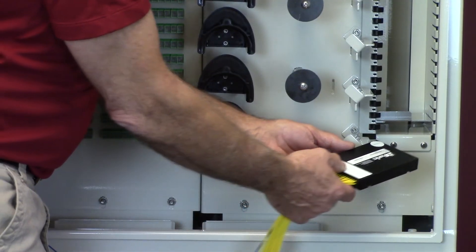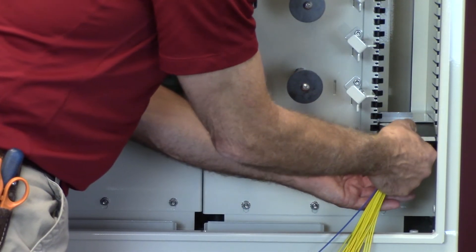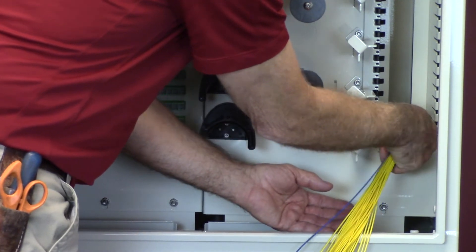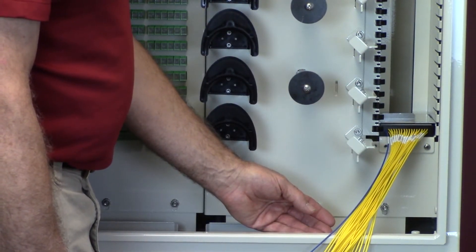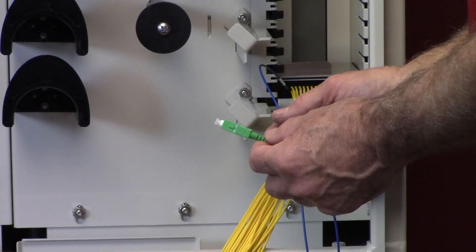Insert the splitter module into the splitter chassis. You will notice this OHC has a vertical splitter chassis. There is a positive latch that will secure the splitter module into position.